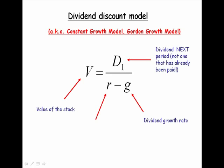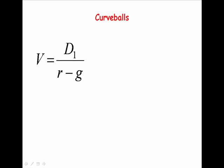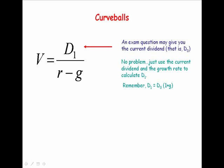R is the required rate of return on the firm's stock. Now, what are some curve balls that make problems of this type more difficult? An exam question could give you the current dividend — that is the dividend at time period 0 — and we need D1. No problem. Just use that current dividend and the growth rate to figure out next period's dividend, because the dividend at period 1 is simply equal to the dividend at time period 0 times 1 plus the growth rate.